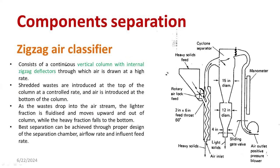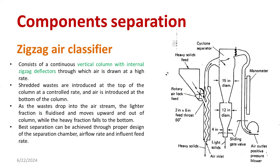The second method is called zigzag air classifier. Zigzag means the movement of air from one point to another point in a zigzag, random fashion. Here we can see a pipe with different diameters — the first pipe has a 15-inch diameter, the second pipe has a 12-inch diameter, and the third pipe has a 4-inch diameter. As the pipe moves from the upper side to lower side, the diameter is drastically coming down. To measure and adjust the pressure we have a manometer. Pressure and volume are inversely proportional.